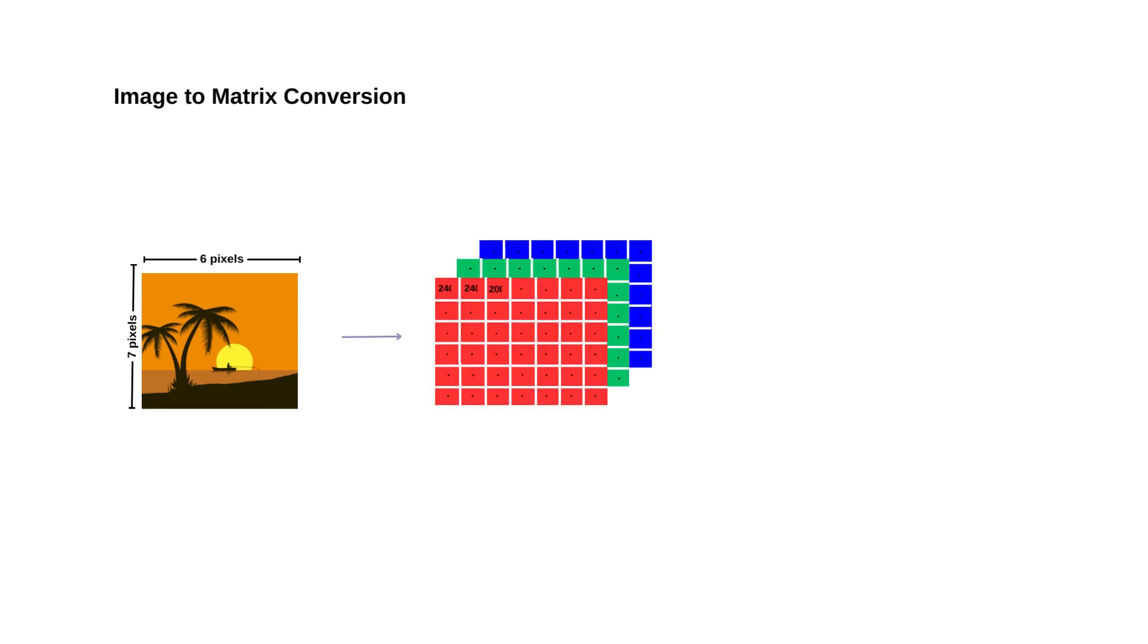Before entering the convolutional layers of a convolutional neural network, an image is typically processed to form a multidimensional matrix, often represented as a stack of RGB (red, green, blue) matrices in the case of color images. In the case of grayscale images, the image is represented as a single 2D matrix, as there is only one channel in the input matrix.